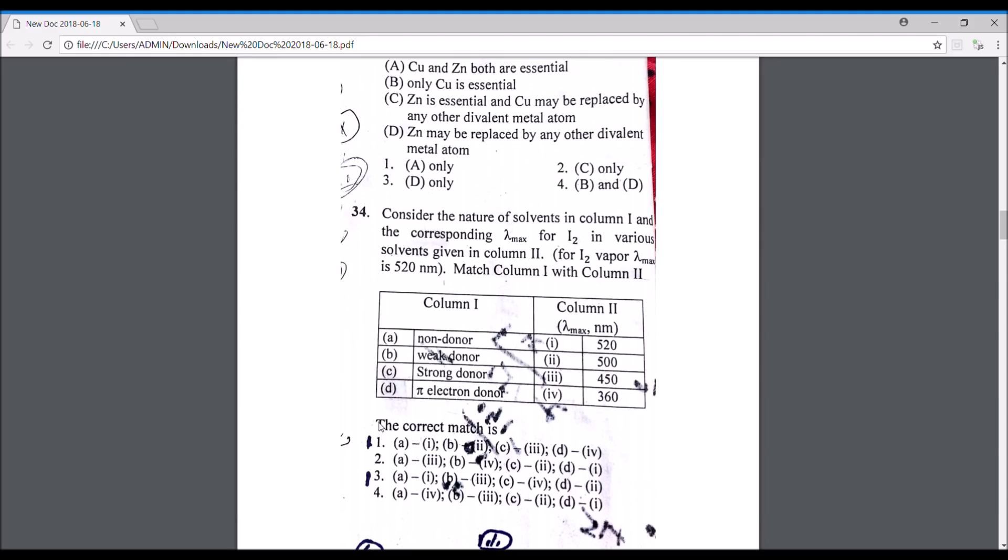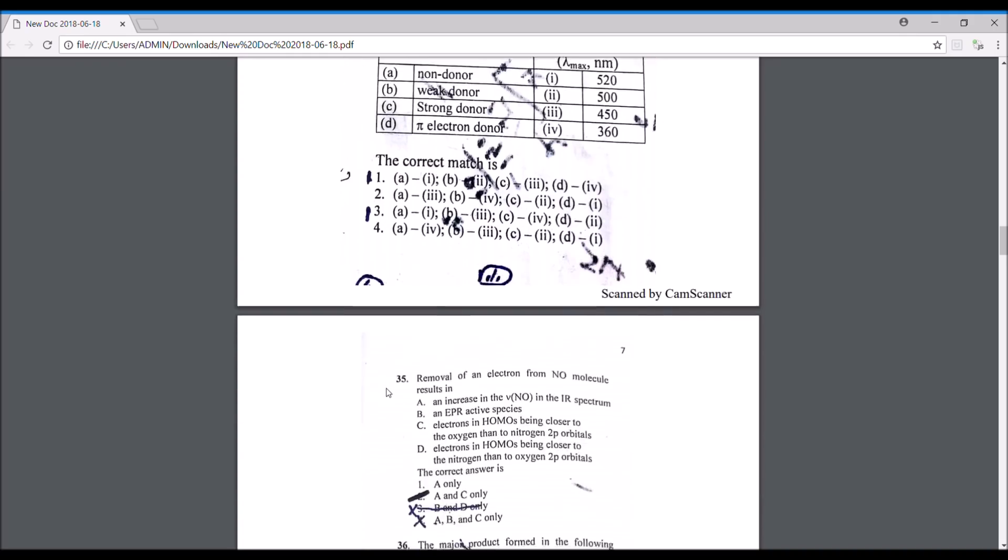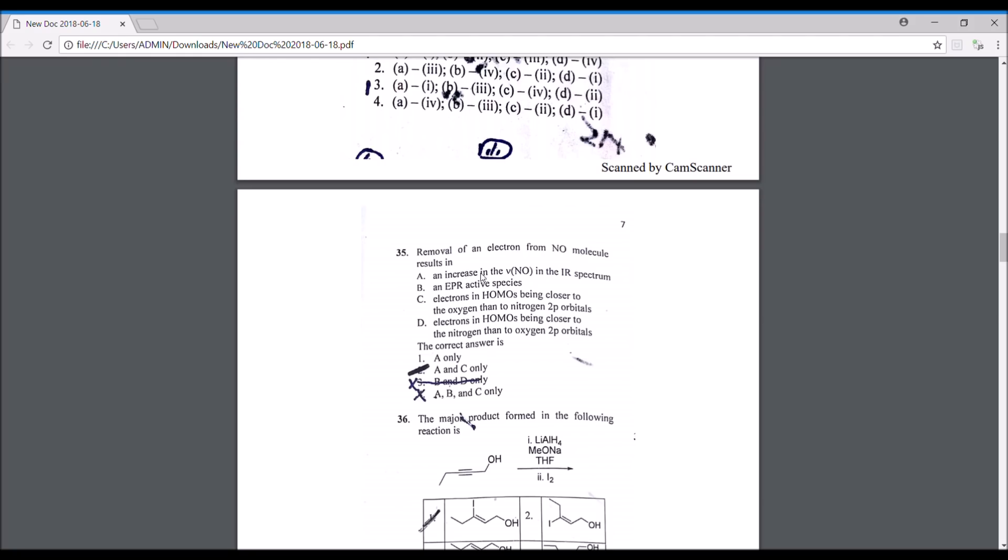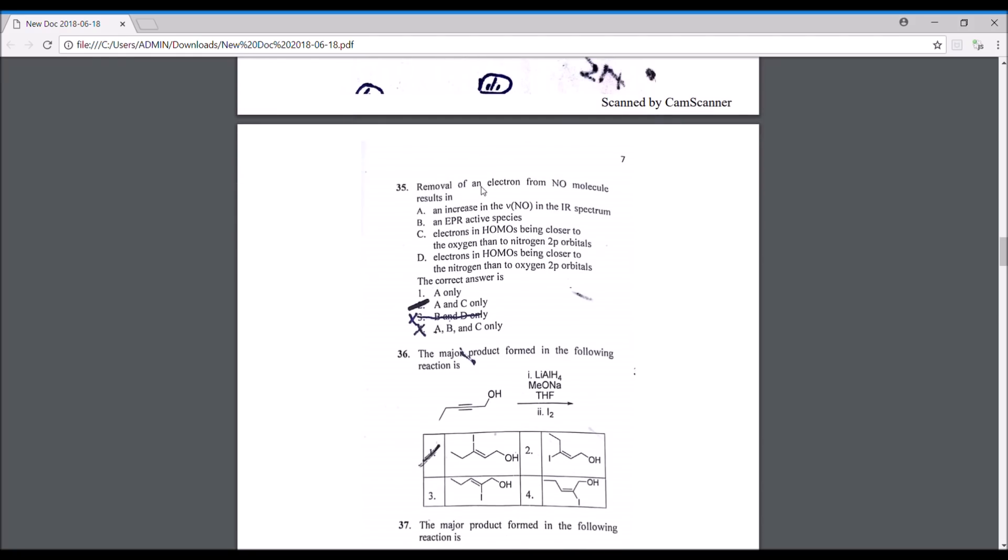This is either one or three, I'm not sure. I got a little confused. Removal of electron from NO molecule results in: basically from 2.5 bond order it converts to a bond order of 3. So your NO bond becomes really strong, so it will show a higher IR spectrum, like the stretching frequency will be higher. So option A is definitely correct. Option B is incorrect: an EPR active species, NO is diamagnetic, but if you remove an electron it turns into diamagnetic, that is it does not have any unpaired electron. C is actually correct: electrons in HOMO become closer to oxygen. If we remove one electron, the HOMO becomes closer to oxygen, whereas if there is one electron present in the original NO molecule, the HOMO is closer to nitrogen. The correct answers are A and C, that is option number two.